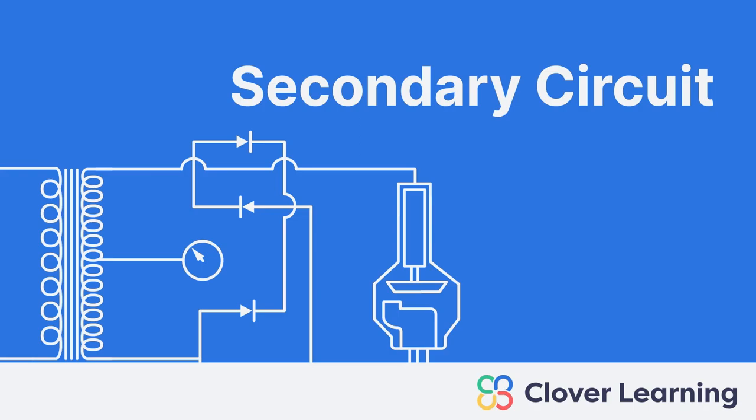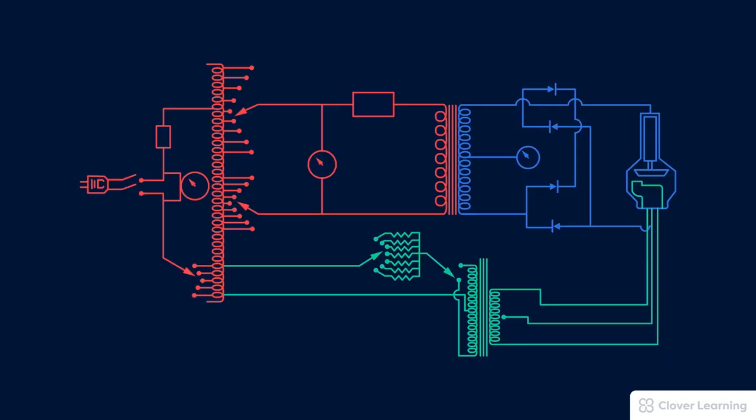Remember that the complete x-ray circuit is actually composed of three combined circuits: the primary circuit, the secondary circuit, and the filament circuit. Each of these circuits supports the process of x-ray production in different ways, and this lesson is about the secondary circuit.